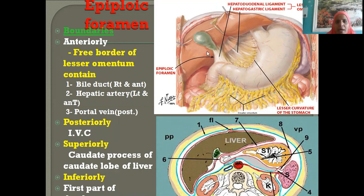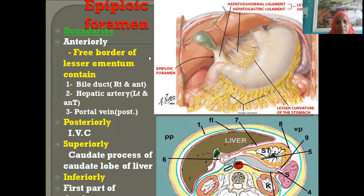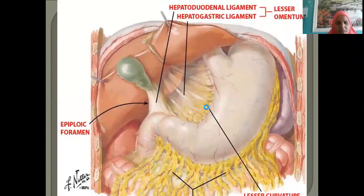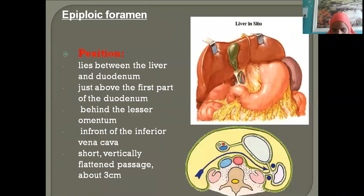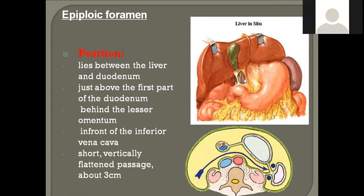Anteriorly, the epiploic foramen is bounded by the free border of the lesser omentum. This free border contains three structures: the portal vein (V), the hepatic artery (A), and the bile duct (D) — using the mnemonic 'VAD': V is portal vein, A is hepatic artery, D is bile duct.